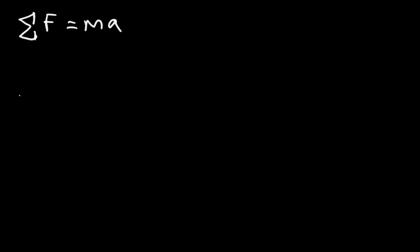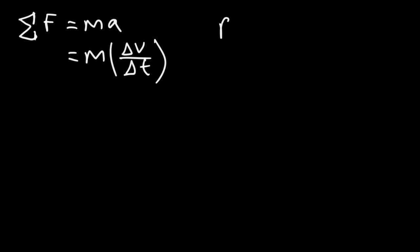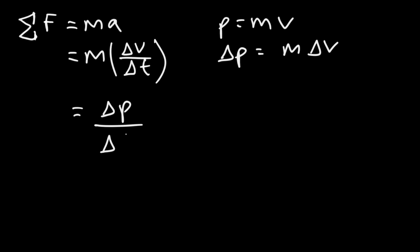The acceleration is the change in velocity divided by the change in time — it tells you how fast the velocity of an object is changing. Since momentum p equals mv, we can replace m times delta-v with delta-p. So the net force acting on an object equals the rate of change in the momentum of the object. You can think of force as how fast the momentum of an object is changing.